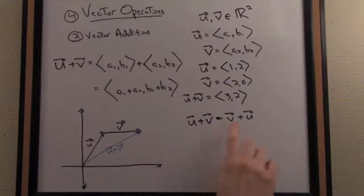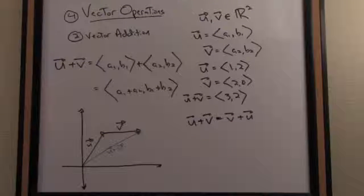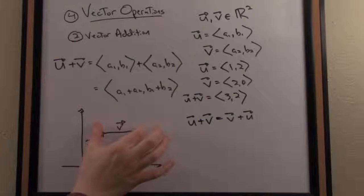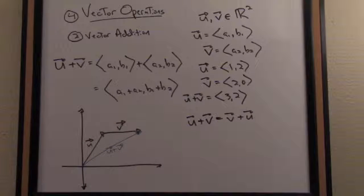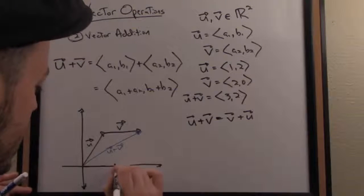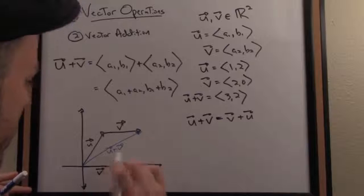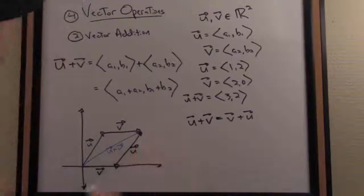So how would I then write v plus u? Well, I arrange the vectors geometrically head-to-tail, now starting with v. If you remember, v I can draw the equivalent vector <2, 0> anywhere in the plane as long as it has the same direction and magnitude. Let's see that. Let's draw v here, so there's my vector v, and then I'm going to add to that the vector u here, which I've also translated.